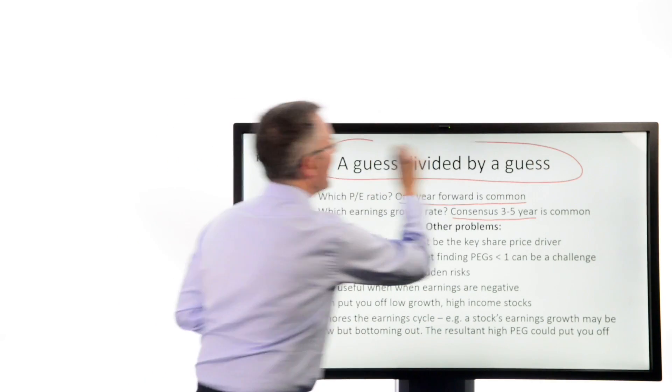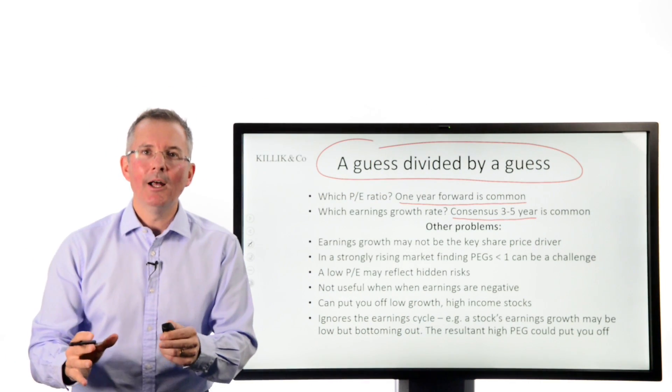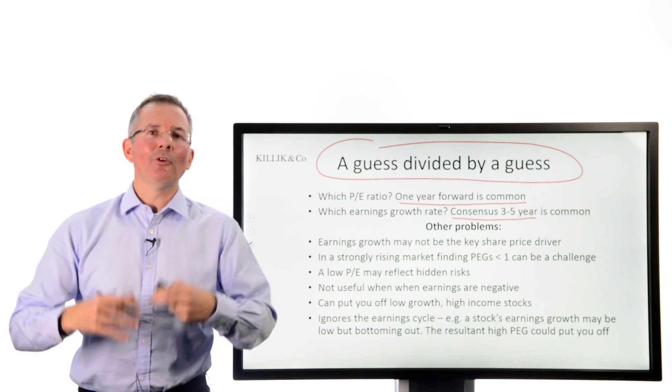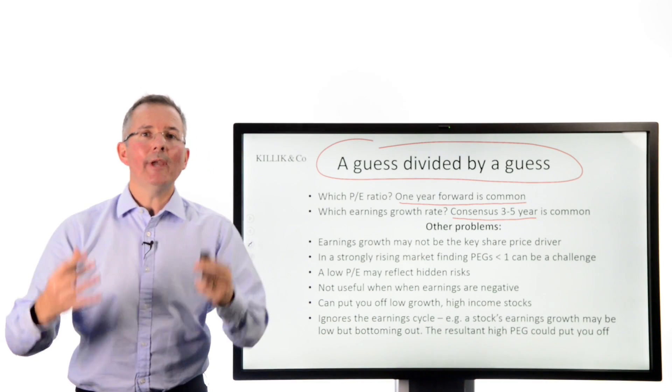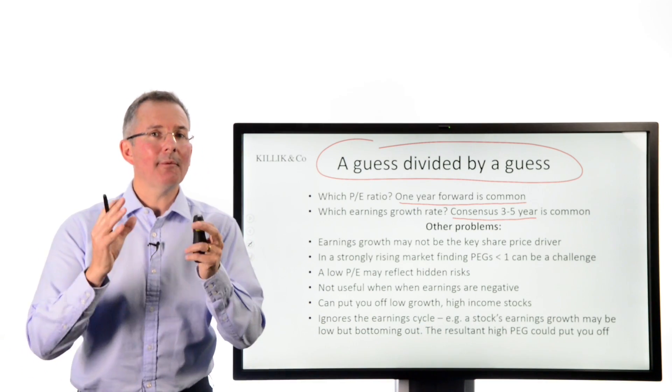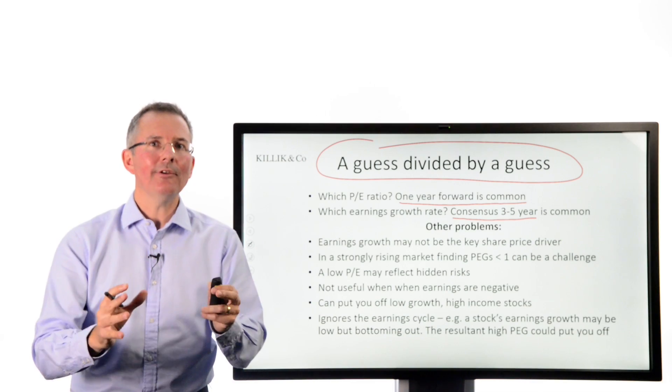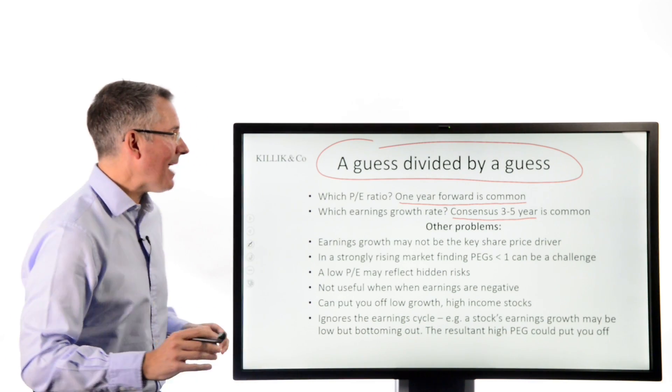So it is kind of a guess divided by a guess to give you a simple number. You have to understand that as soon as you get into forecasting, you get into uncertainty, you get into mistakes potentially, and that's something to bear in mind.